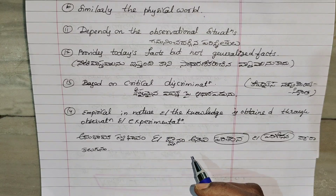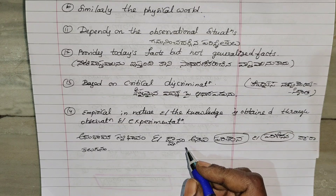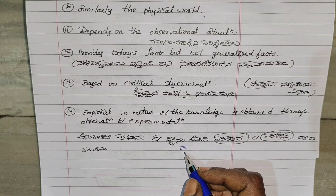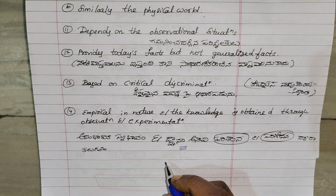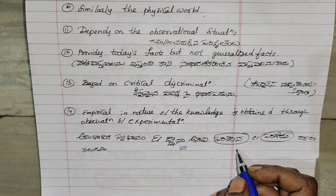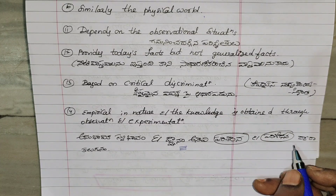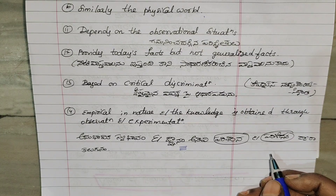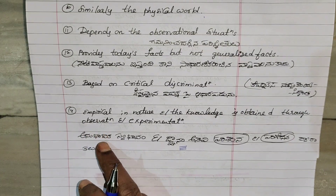Then we have some theoretical knowledge. For example, we have instrumentation, parishilana, and parishodhana dhwara kaluthayanta. This is a complete sentence.